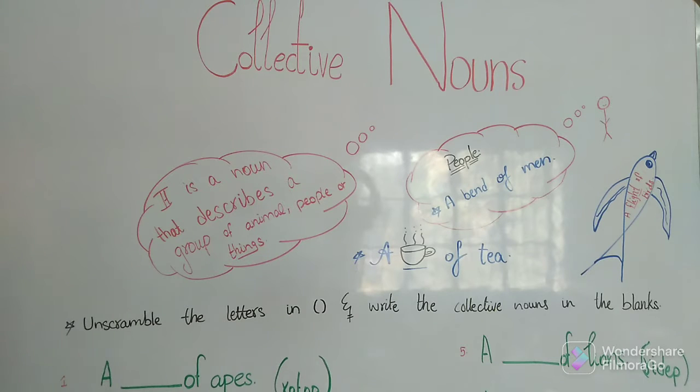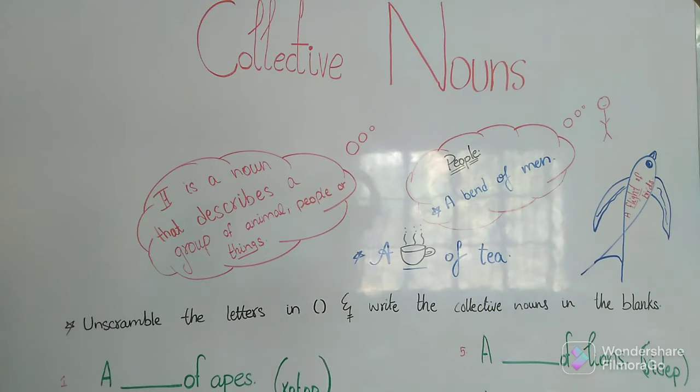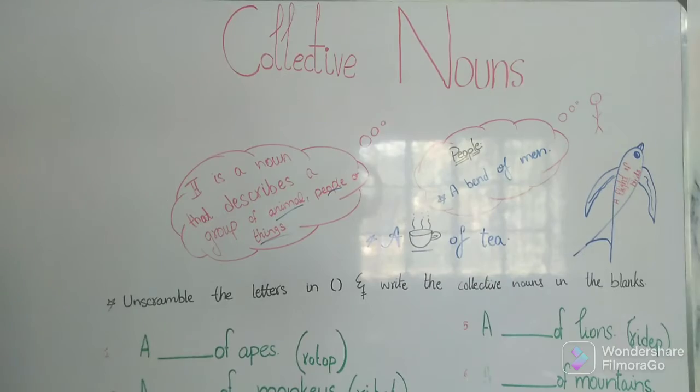So for that, first we have to understand what collective noun is. What are collective nouns? So collective noun is a noun that describes a group of animals, people, or insects. Now what does it say? That there would be a group of anything.